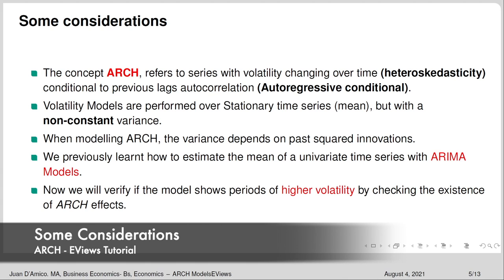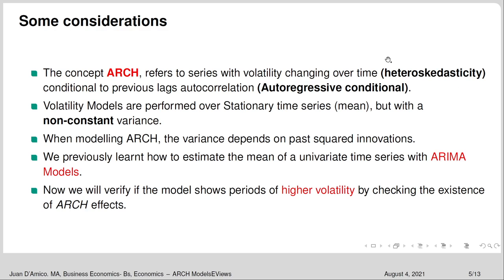The concept of ARCH refers to series with volatility changing over time — that's why we talk about heteroscedasticity — and it is conditional on previous lags, which is why we talk about autoregressive conditional. The variance is not constant; it changes depending on what happened in the recent past. Volatility models are applied to stationary time series with a non-constant variance. When modeling ARCH, the variance depends on past squared innovations. We will verify if the model shows periods of higher volatility by checking the existence of ARCH effects.